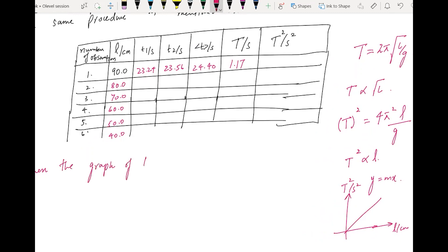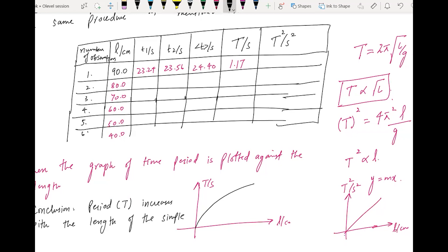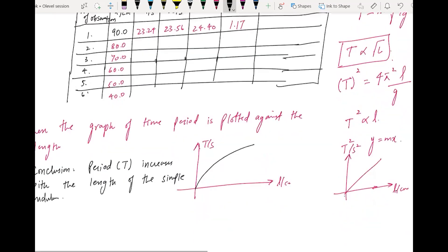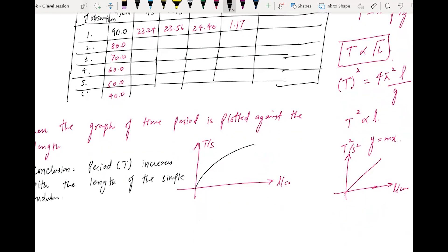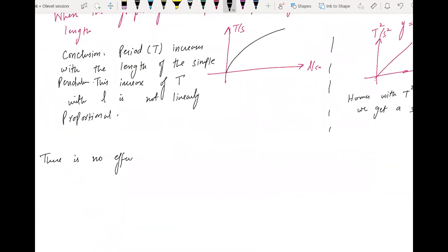When the graph of time period is plotted against the length, you get a graph like this. The conclusion here is: if the length increases, the time period also increases. So the conclusion is that period T increases with the length of the simple pendulum. This increase is not linearly proportional. However, with T square and L we get a straight line. There is no effect on the time period from increasing or decreasing the amplitude or the mass of the pendulum - only the length and the gravitational field strength matters.